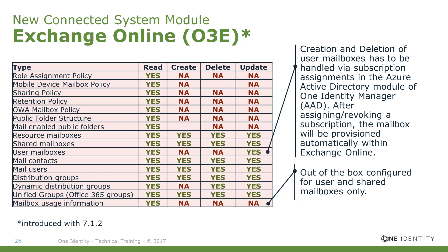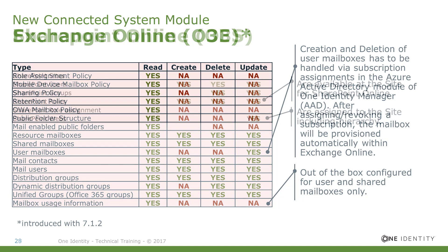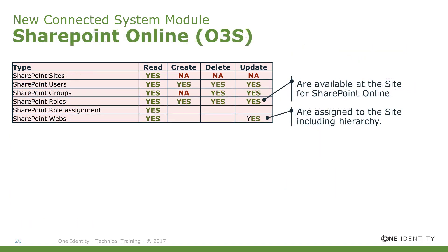Something else could potentially be configured using our configuration capabilities. You may have heard that in One Identity Manager version 8, one or two connected system modules would be delivered after the release — that is not necessary, especially because all are available. This is also the case for SharePoint Online, which was announced to come later. SharePoint Online is available, and you can download that connected system module directly from the support page. It is part of the standard installation package of One Identity Manager.